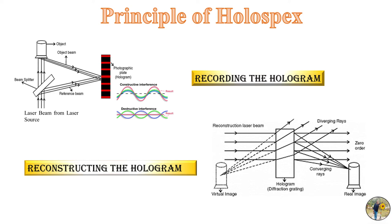Based on this an interference pattern it is being recorded onto the photographic plate in the form of dark and bright fringes. Now once the hologram is recorded the second diagram shows the reconstruction of the image from the hologram.